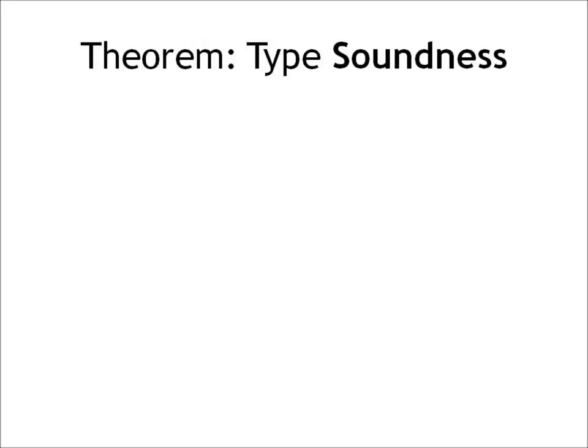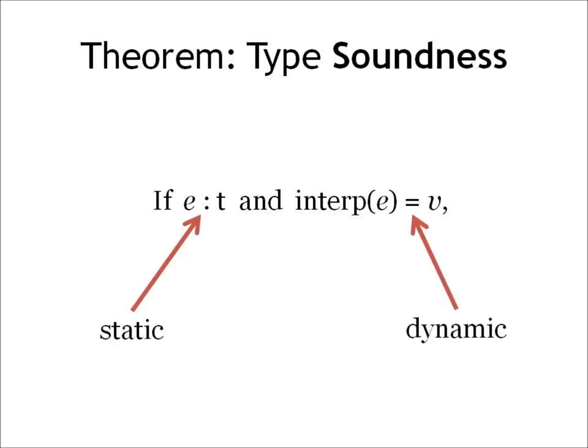Now we usually care about a theorem that's called type soundness. Soundness says the following thing. If we have some program E and it has a type T, and when run E is going to produce some value V. Now notice that we've already made a connection to both the static side where E has a type and the dynamic side where E is going to evaluate to a value, then we would like it to be the case that V, the value produced by the program, also has type T.